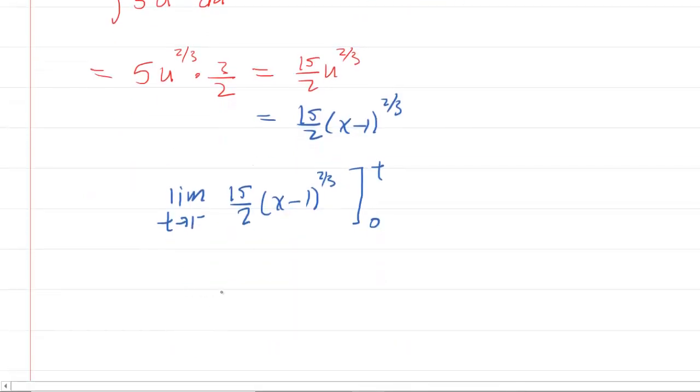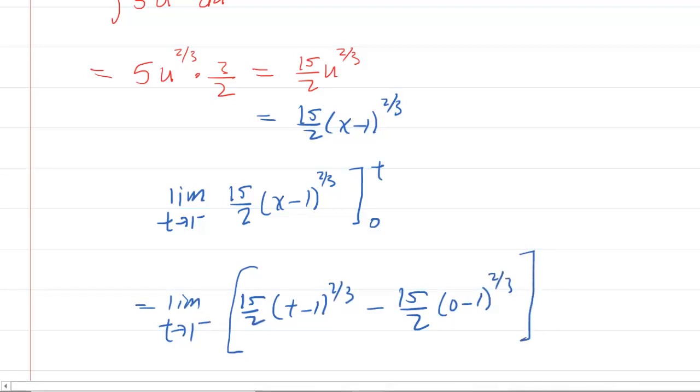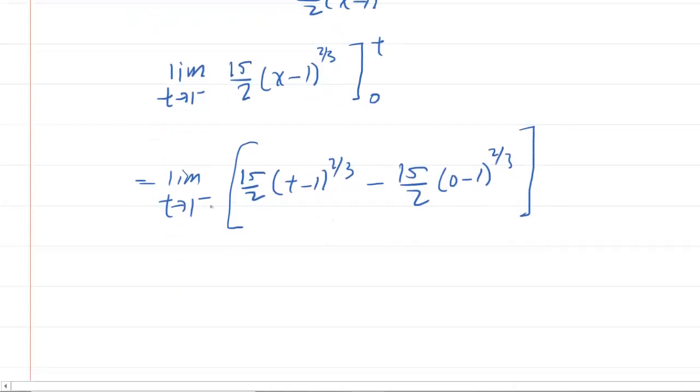And of course, we plug the upper bound in first. So we're going to plug in t first. We do have to continue to write the limit in front here. And then we will subtract the value we obtained by plugging in the lower bound, like so. So now we're going to basically let t approach 1. And what that really means is you can plug 1 now into the expression. And you'll notice that it is permissible to plug 1 in now because we will not get an undefined result. We have 1 minus 1 here. And then minus the 15 halves times negative 1 to the power of 2 thirds.